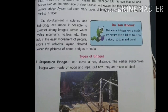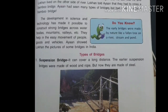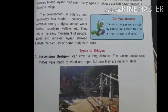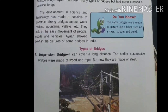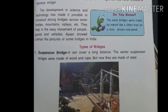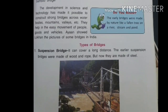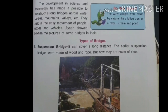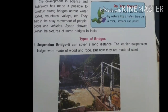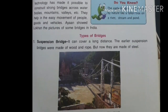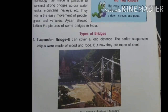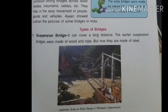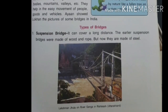The first type is the suspension bridge. Have you ever gone through Laxman Jhula? That is an example of a suspension bridge. These types of bridges can cover a long distance and were originally made up of wood and rope, but now they are made up of steel.